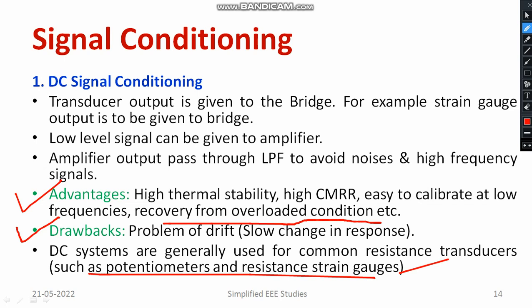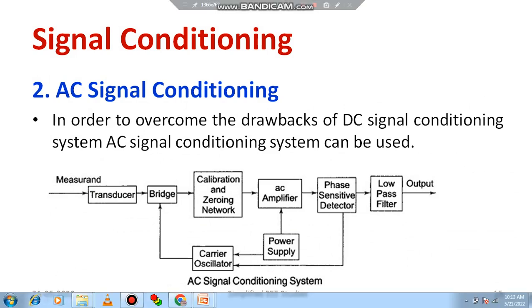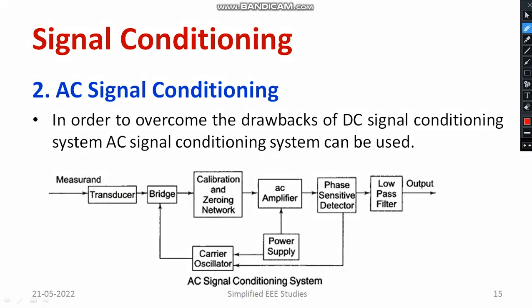The purpose of DC signal conditioning devices is clear, but the main issue is drift. To get rid of the drift problem, we use AC signal conditioning devices. The main components of an AC signal conditioning device include a transducer, a bridge network, a calibration and zero-crossing network, and — instead of a DC amplifier — an AC amplifier.